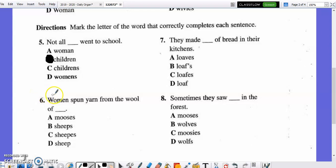Number six. Woman spun yarn from the wool of blank. A, mooses. B, sheeps. C, sheepes. Or D, sheep. Mark the correct response now. This is one of those special irregular plurals where sheep as singular is also sheep as plural. The answer is D, sheep.